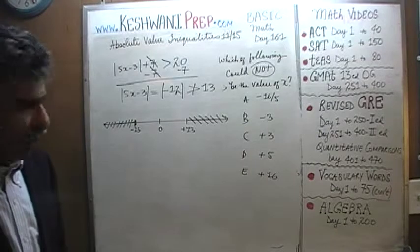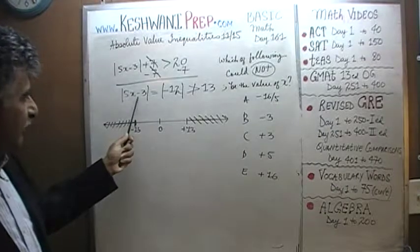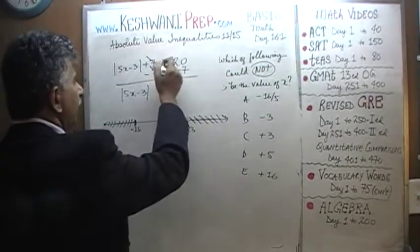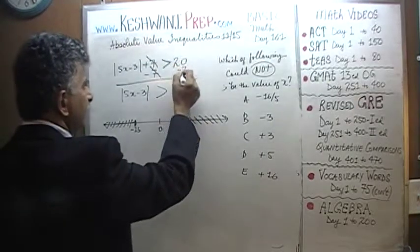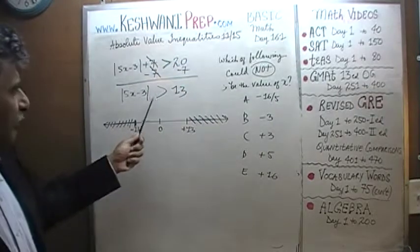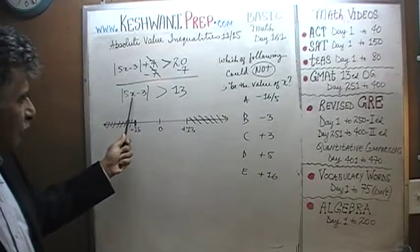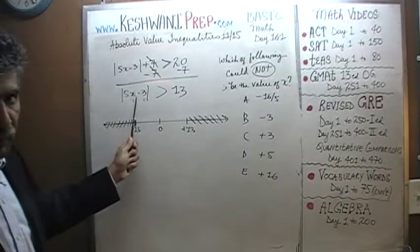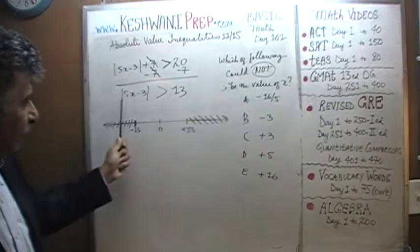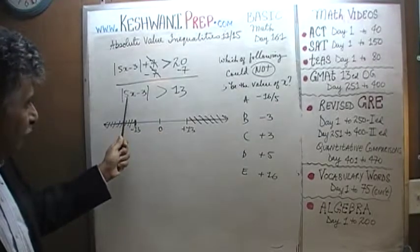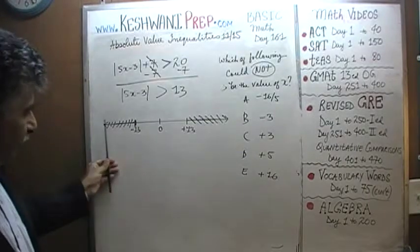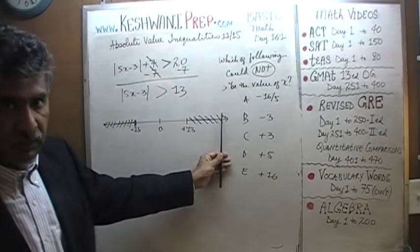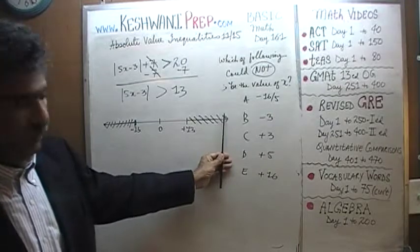So the two regions where the absolute value of 5x minus 3 is going to be more than 13: one region is where 5x minus 3 happens to be more than positive 13. Another region is when 5x minus 3 happens to be less than negative 13, to the left of negative 13. It's either going to be left of negative 13 — absolute value more than 13 — or to the right of positive 13 — absolute value more than 13.